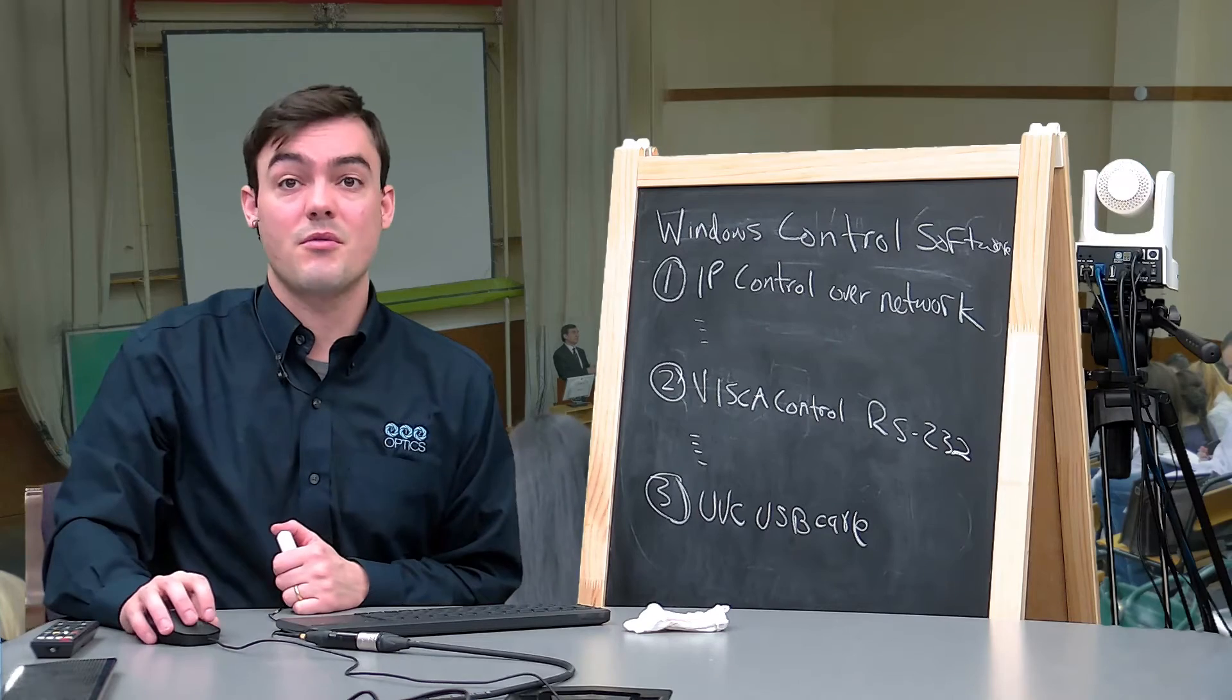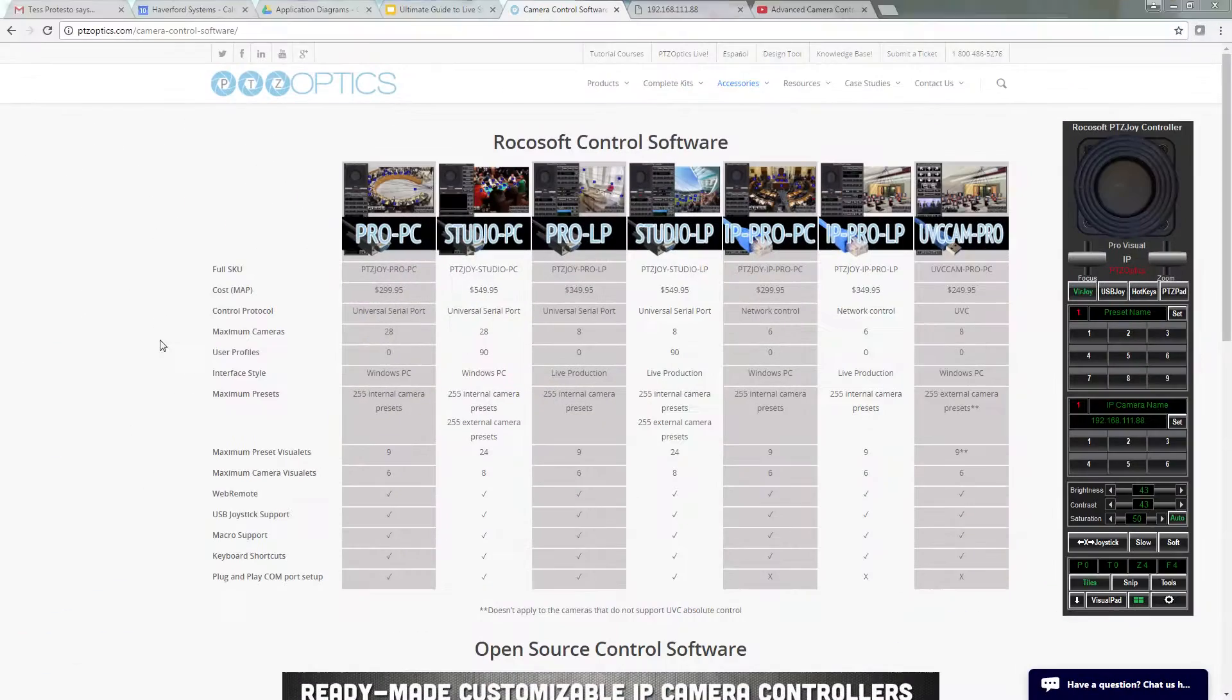And then three is UVC that's a USB cable super easy integration. Okay so those are our three options. The difference between studio and pro, you can see there's a lot of different pricing here. You can have more user profiles so if you have multiple operators who want to have different user profiles we have that ability. We can do external camera presets, we can increase the number of the visualets which are the actual visual pictures of each preset. Other than that those are the main things between studio and pro.